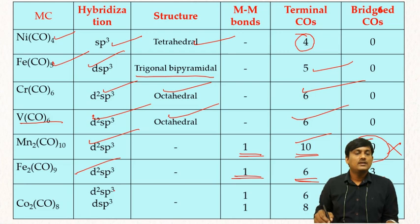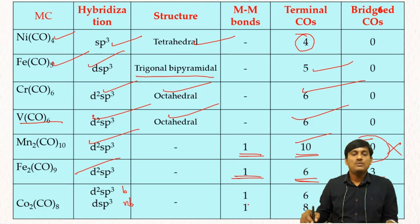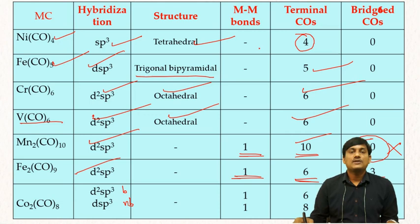Co₂CO₈ has 2 structures. Bridged structure: d²sp³ hybridization, 1 metal-metal bond, 6 terminal COs and 2 bridged COs. Non-bridged structure: dsp³ hybridization, 1 metal-metal bond, 8 terminal COs and 0 bridged COs. This completes the structure of metal carbonyls.